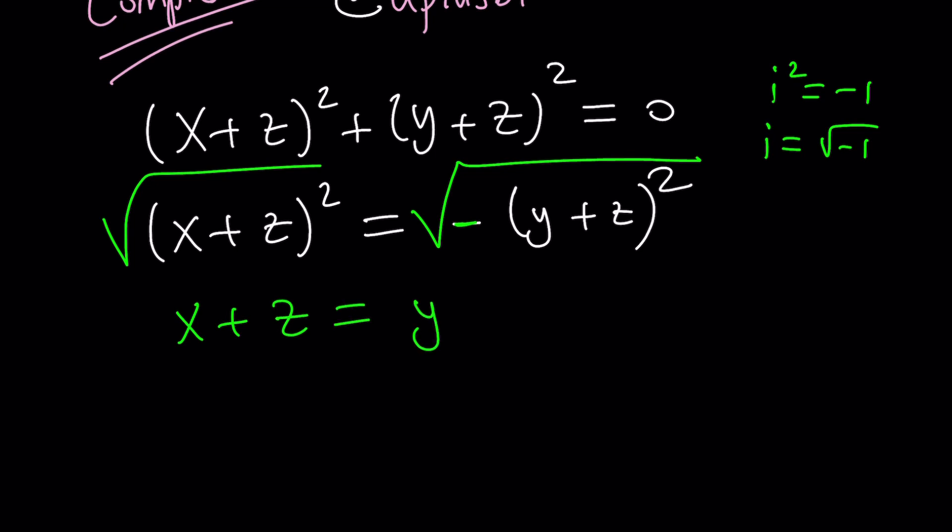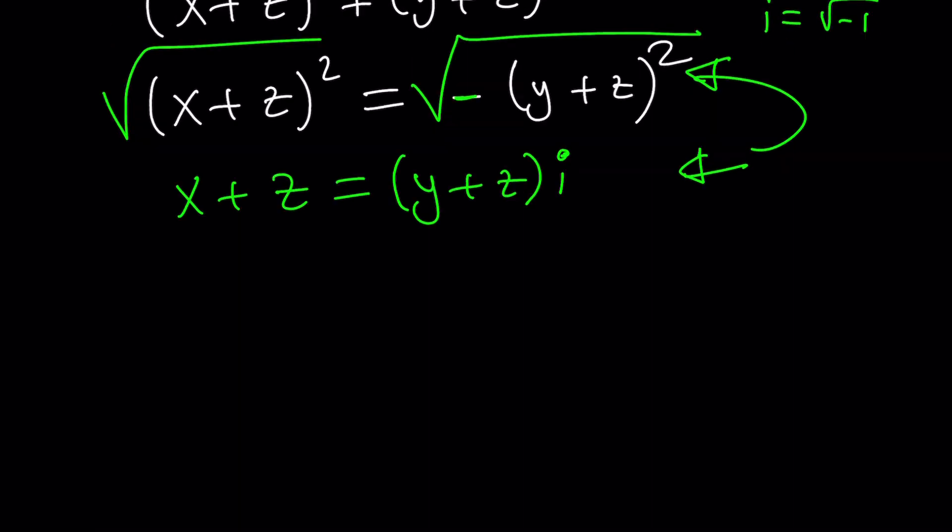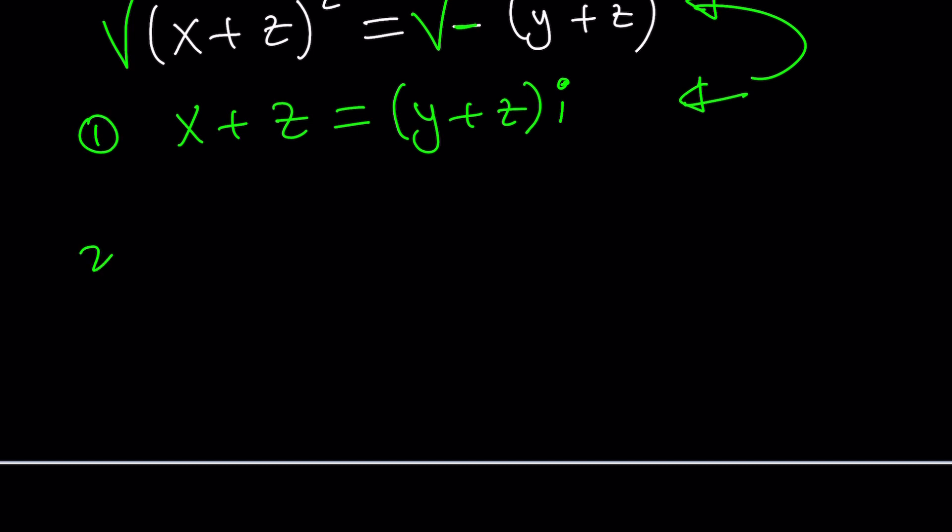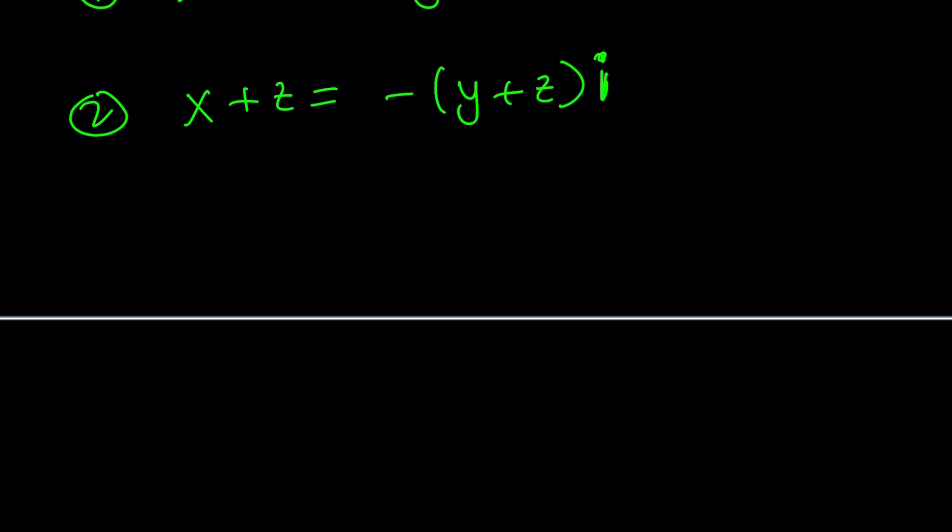x plus z is y plus z multiplied by i. By the way, when you square both sides here, you should get this one, which means it's true. But it's not a two-way implication. There are two results, like first case and second case. The second case is the opposite because when you square negative i, you still get i squared, which is negative one. Awesome. So we're going to look at each case separately. Let's start with the first one. So with the first case, we have x plus z equals y plus z multiplied by i.